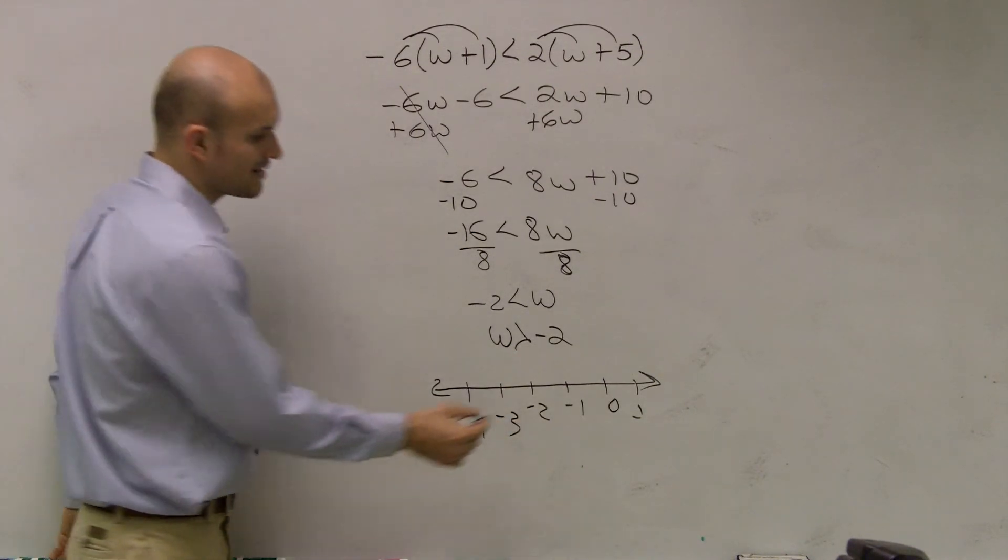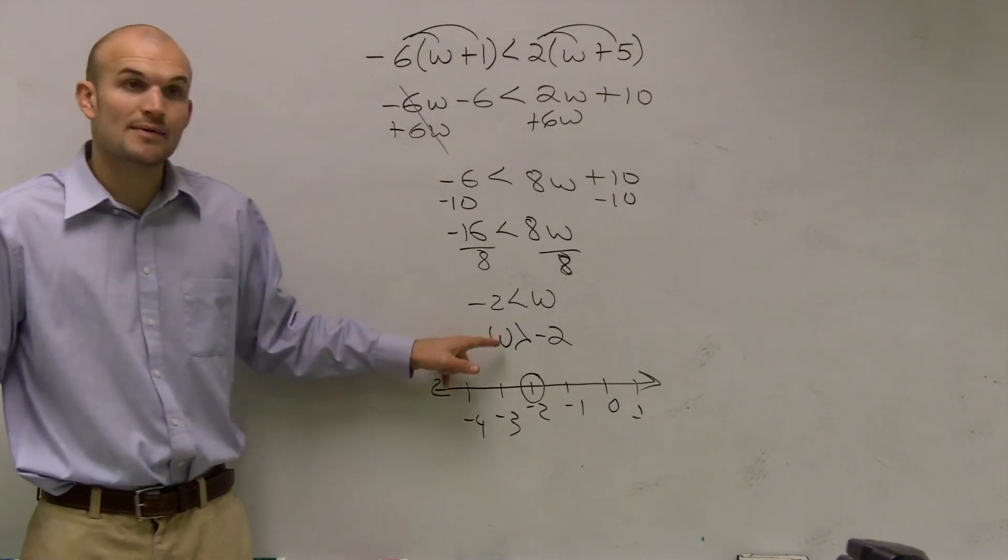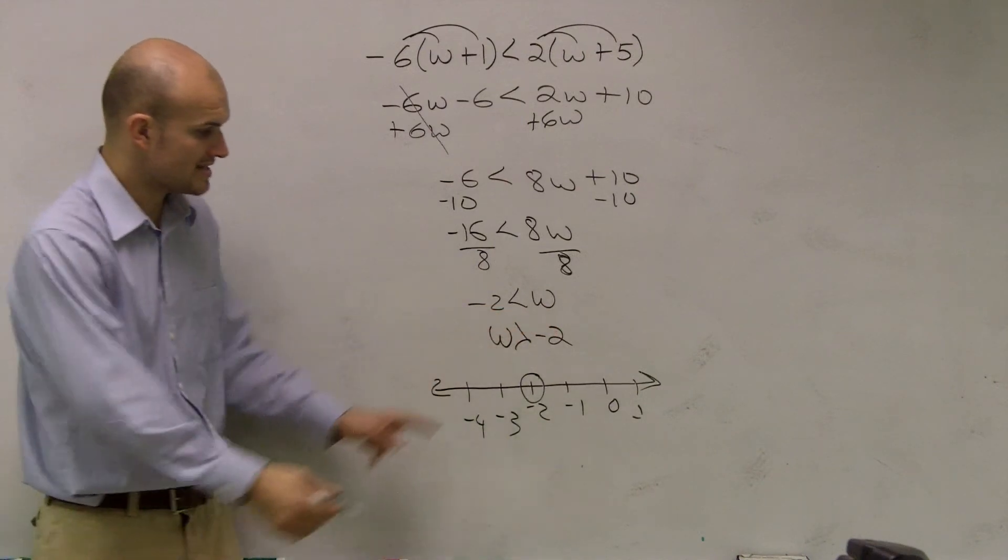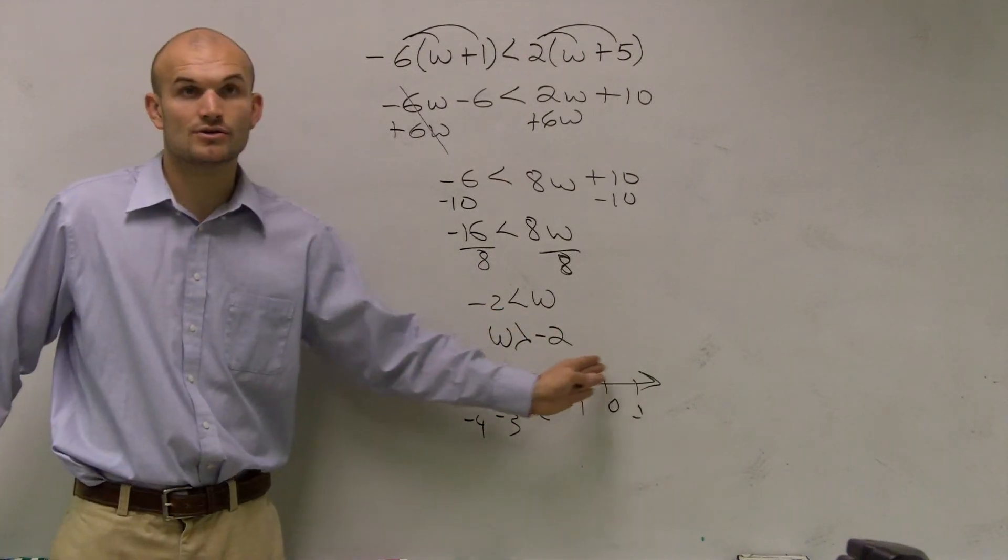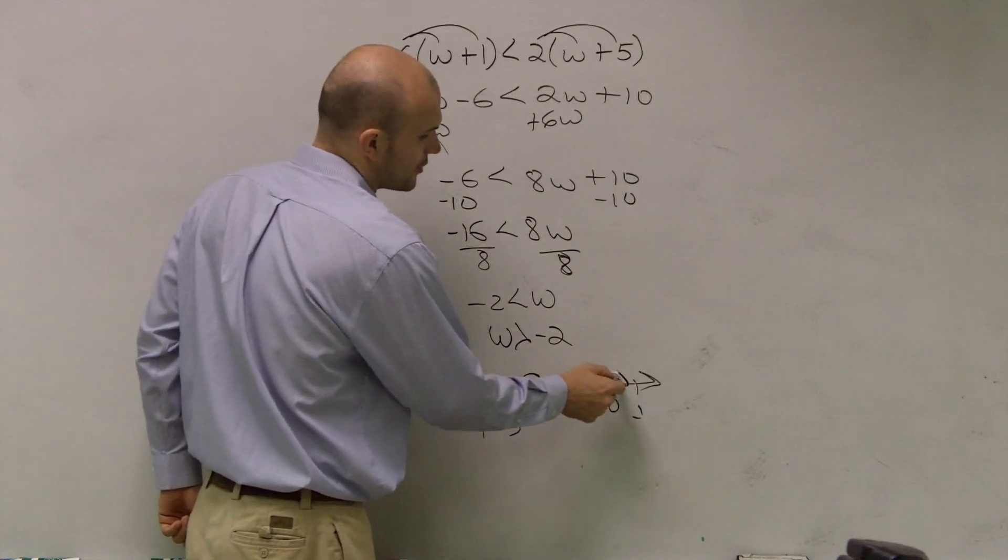And it says w, all the values that are greater than negative 2. Well, is that going to be all my values to the right or to the left? To the right. So you're going to draw an arrow going to the right.